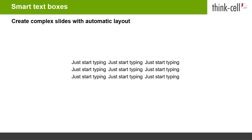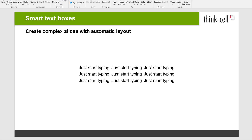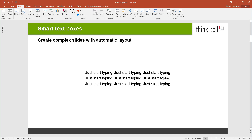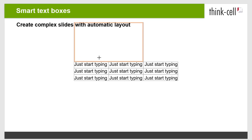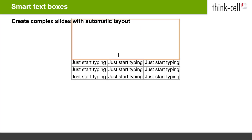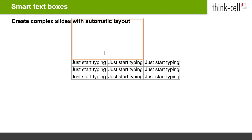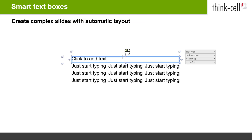ThinkCell's text boxes are so smart — not only can you build tables using them. You can insert a new text box anywhere on the slide and it will still try to place and size itself to match the existing layout. So, for example, if you insert a new text box and hover over existing text boxes, the insertion depends on the position of your mouse cursor. If you hover over only one text box, the new one will be placed above it. If you hover over two text boxes, it will be placed over the two. And, as you might have guessed, this also works with three or more text boxes.